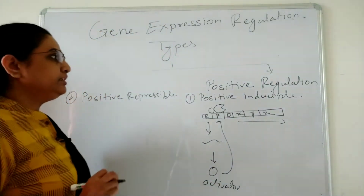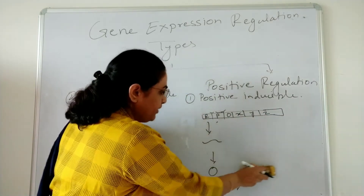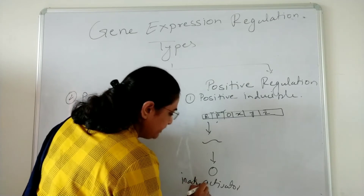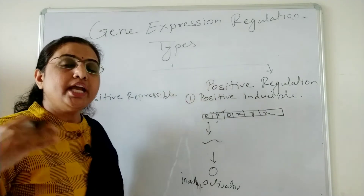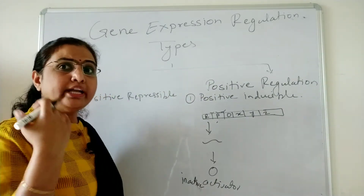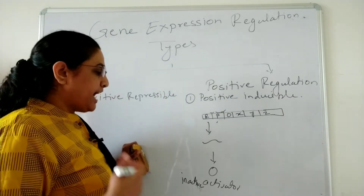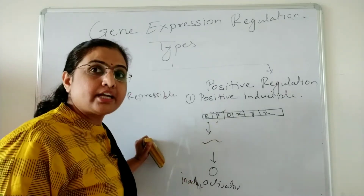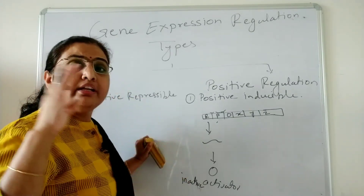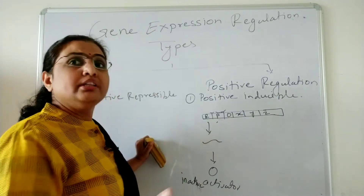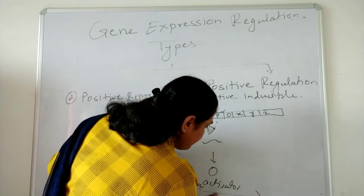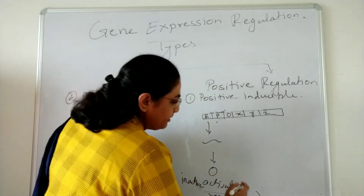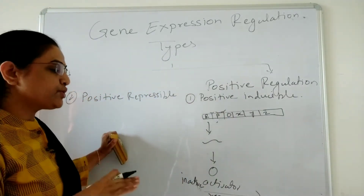In positive inducible regulation, the regulatory gene product is an activator, but that activator is inactive. Because it is inactive, it cannot bind near the promoter, and it has lost the ability to load RNA polymerases. So there is no transcription and no gene expression — this is called repression. This is the first stage of positive inducible regulation.